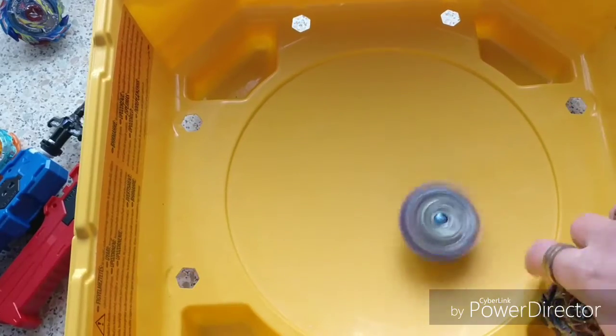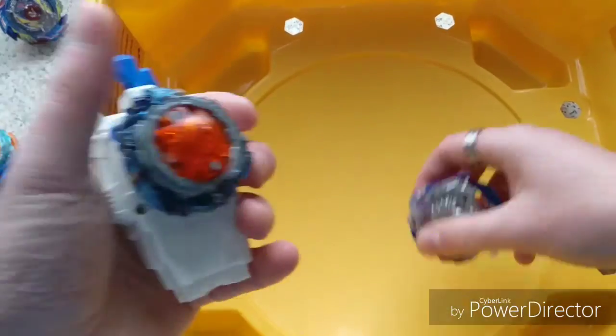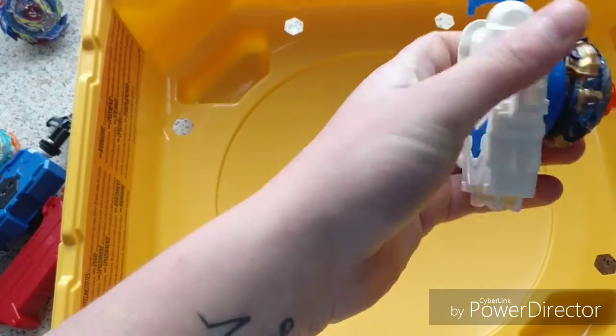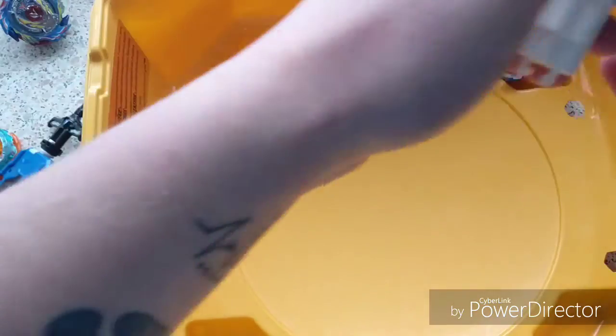Three, two, one, go. We've already got Drain Fafnir out. It went out straight. So we'll get this bad boy back in. Three, two, one, go. Right now it's the ripcord guys. We're going to redo that.